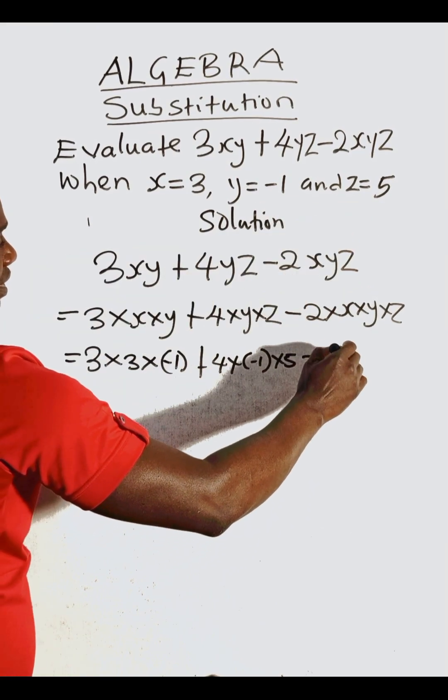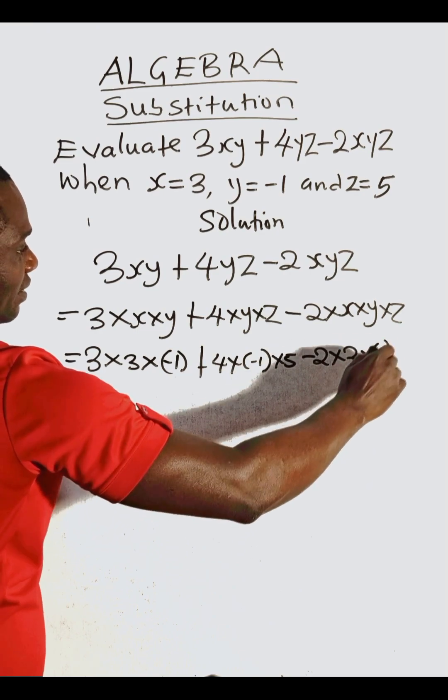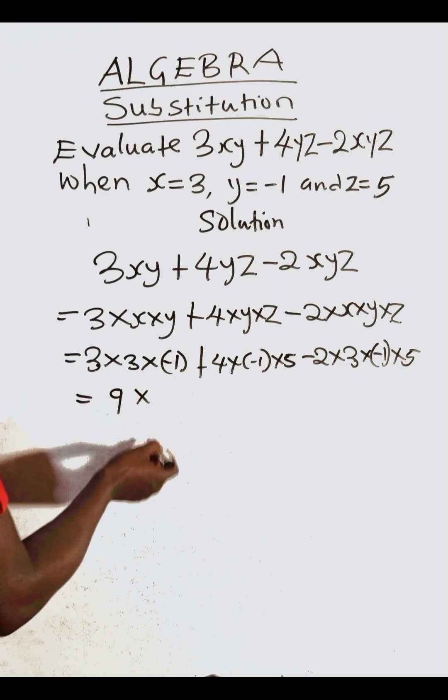Minus two times x is three, then y minus one, then z five.